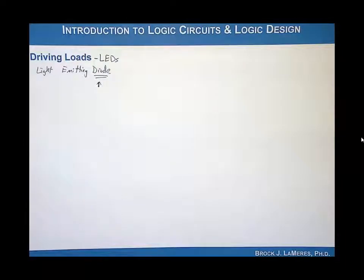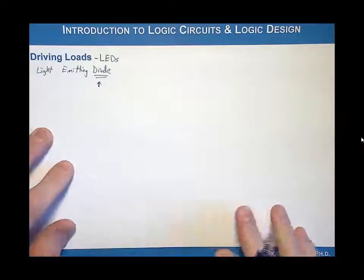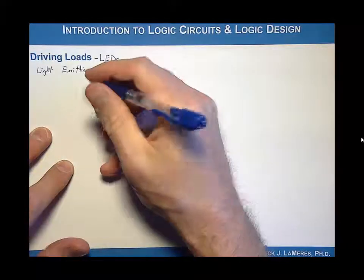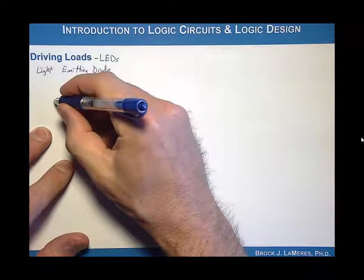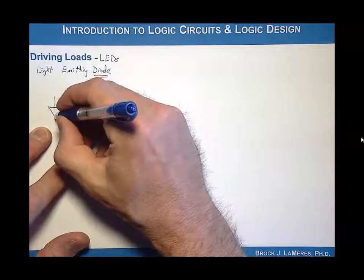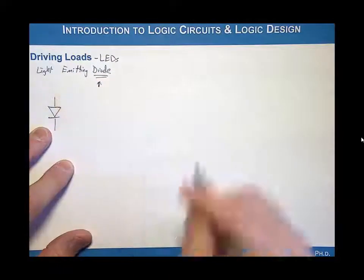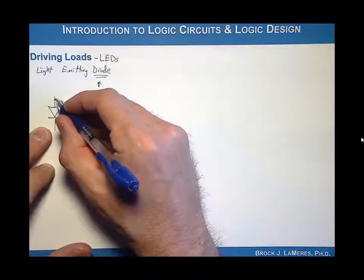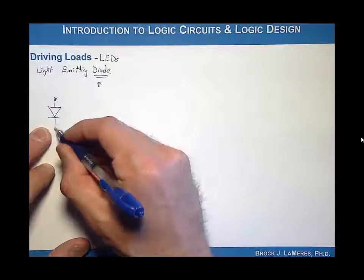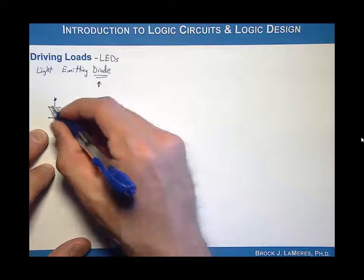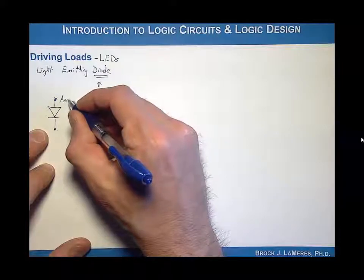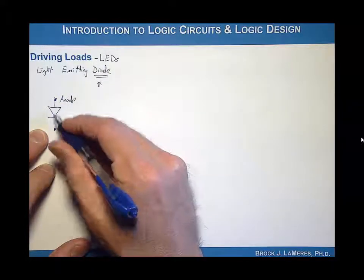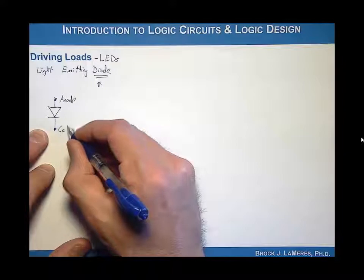Let's start by looking at the behavior of a diode. The symbol for a diode is a triangle with a line on it. It's a directional device, meaning that the terminals are not arbitrary. The terminal on one side of the triangle is called the anode, and the terminal on the other side is called the cathode.